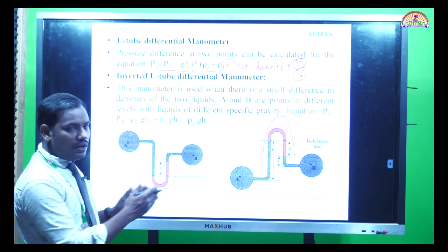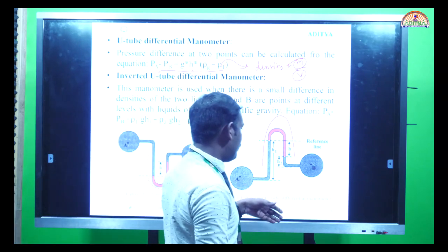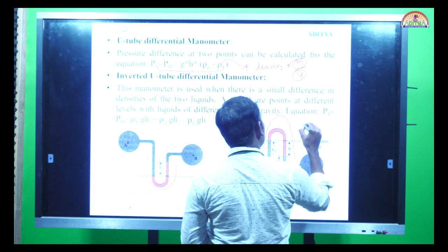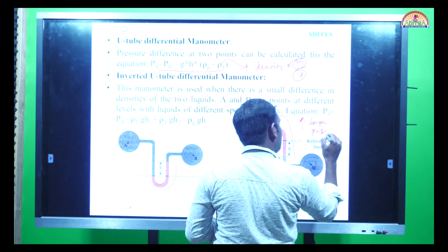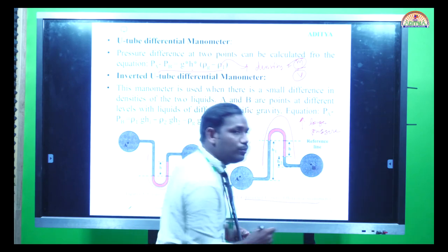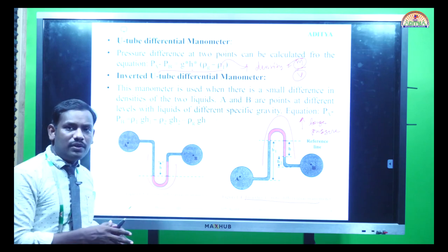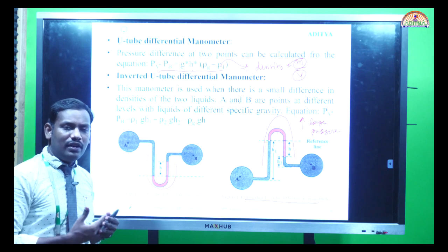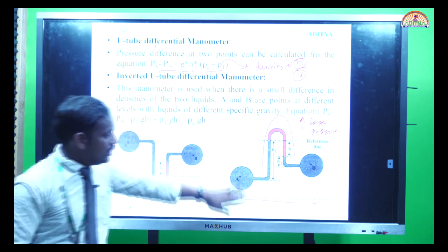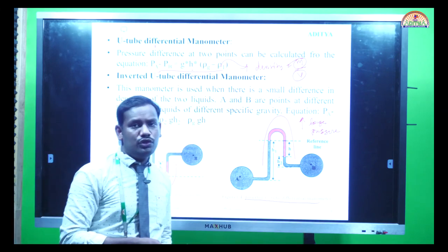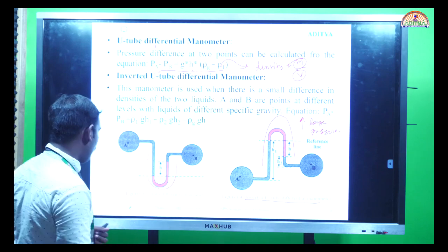The inverted U-tube differential manometer looks like an inverted U. The working principle and equation are the same as the U-tube differential manometer, but it is used to accommodate higher pressure liquids. The choice of manometer depends on the operator and the liquid being handled. For a very high pressure cryoscopic liquid, you would preferentially select the inverted U-tube manometer; otherwise, you go with a simple manometer.